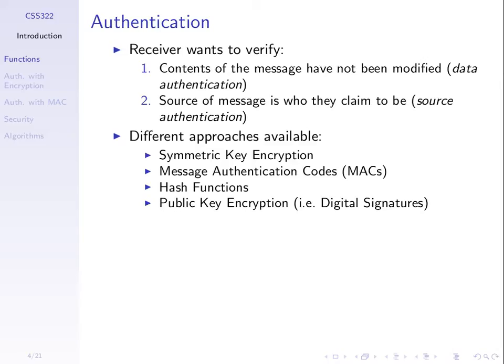How do we do it? The techniques we've seen for symmetric key encryption provide some built-in authentication. But there are other techniques which can be more efficient and easier to use than encryption. These include message authentication codes (MACs), hash functions, and using hash functions combined with public key encryption to create digital signatures. We'll look at how symmetric key encryption, which we've already studied, can be used for authentication.